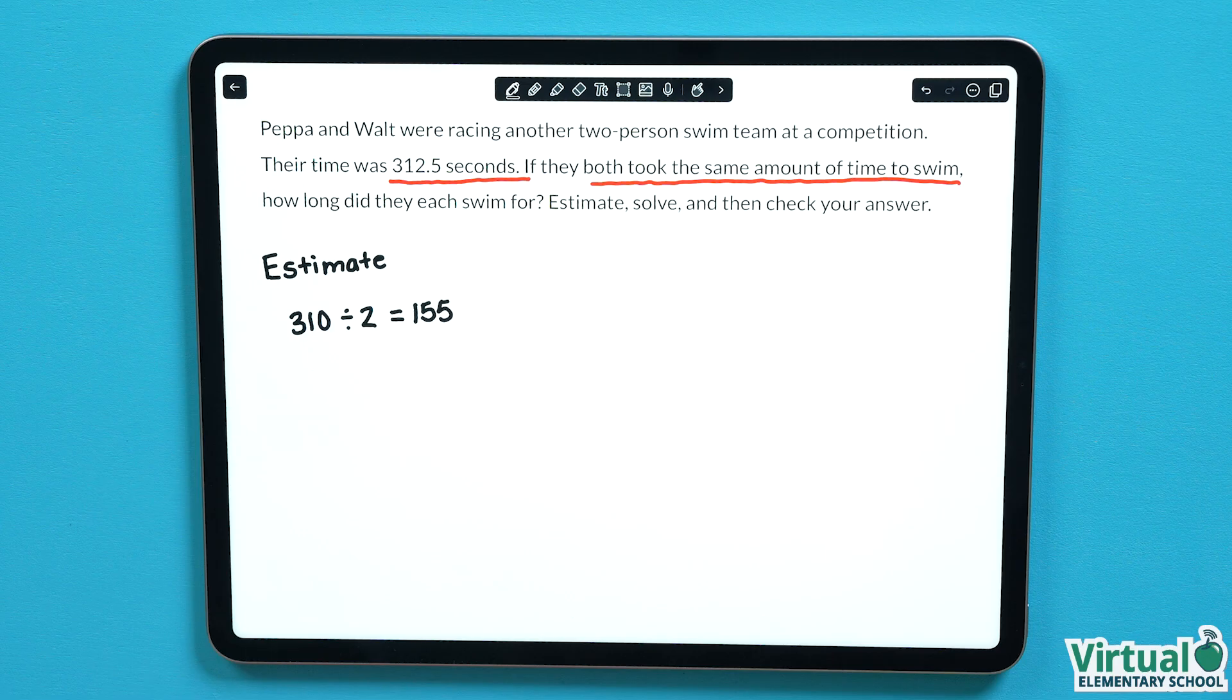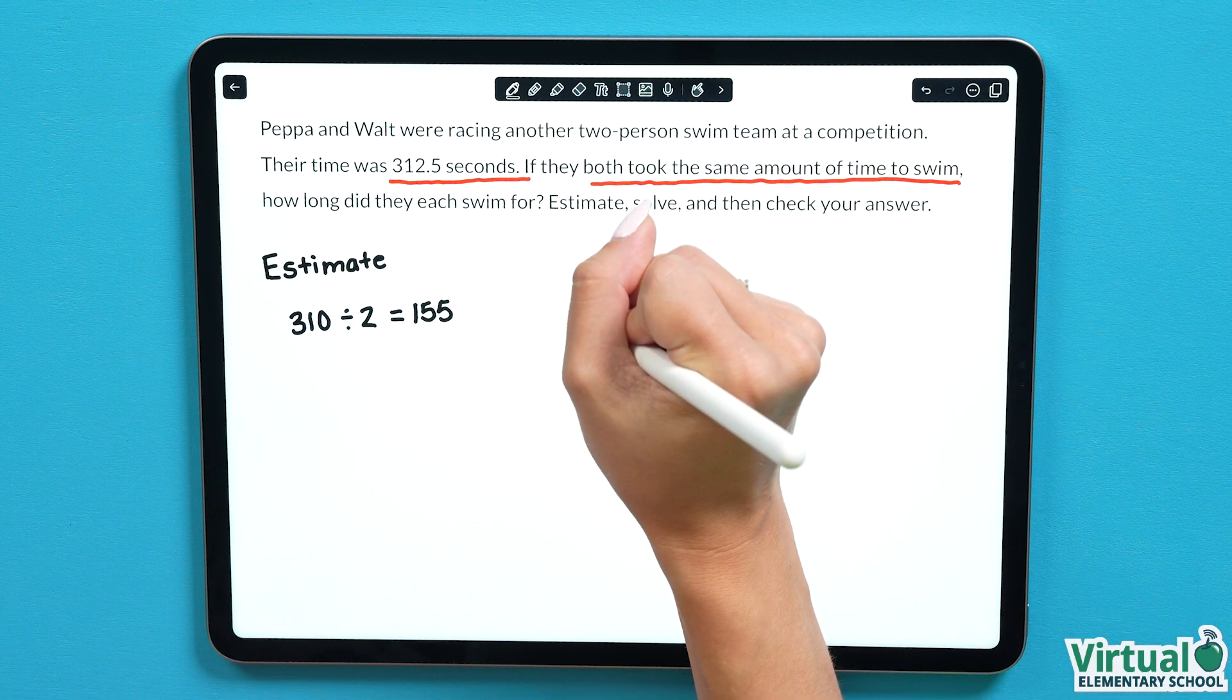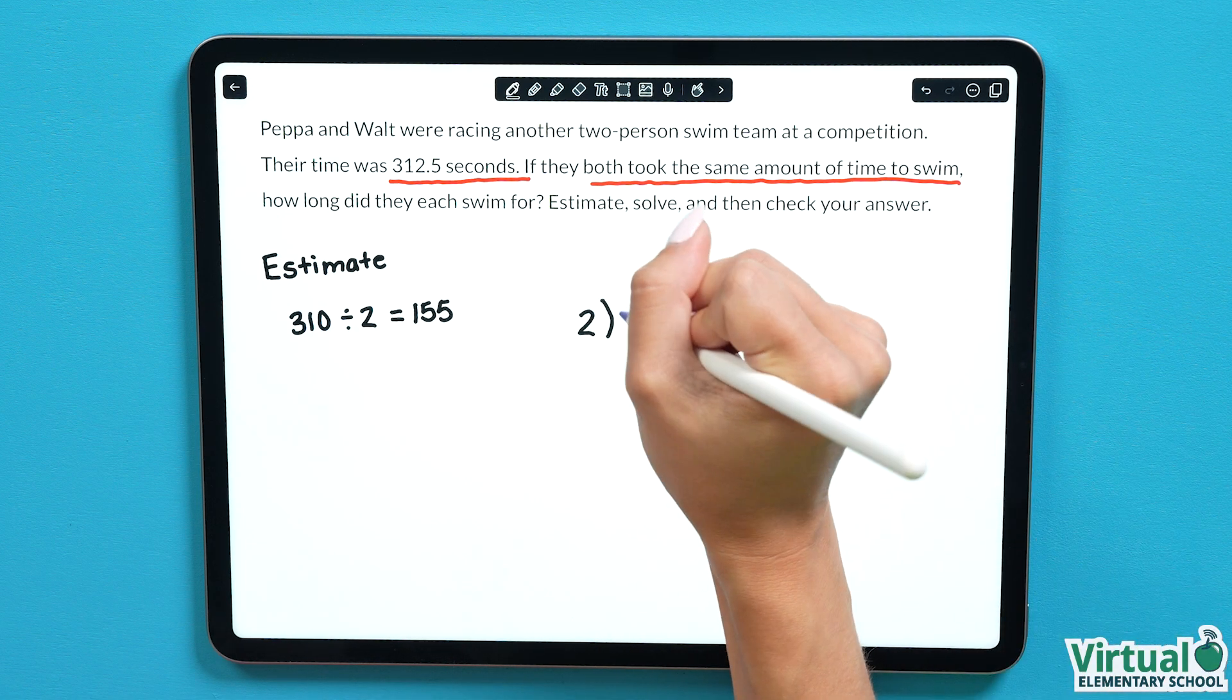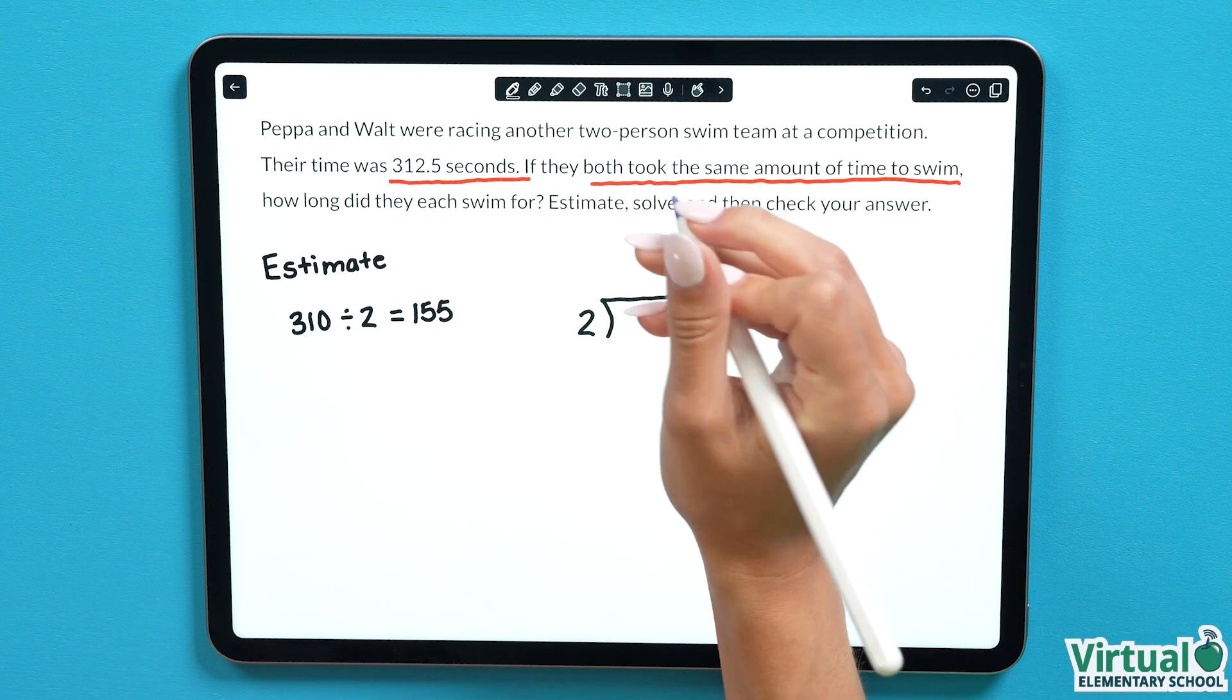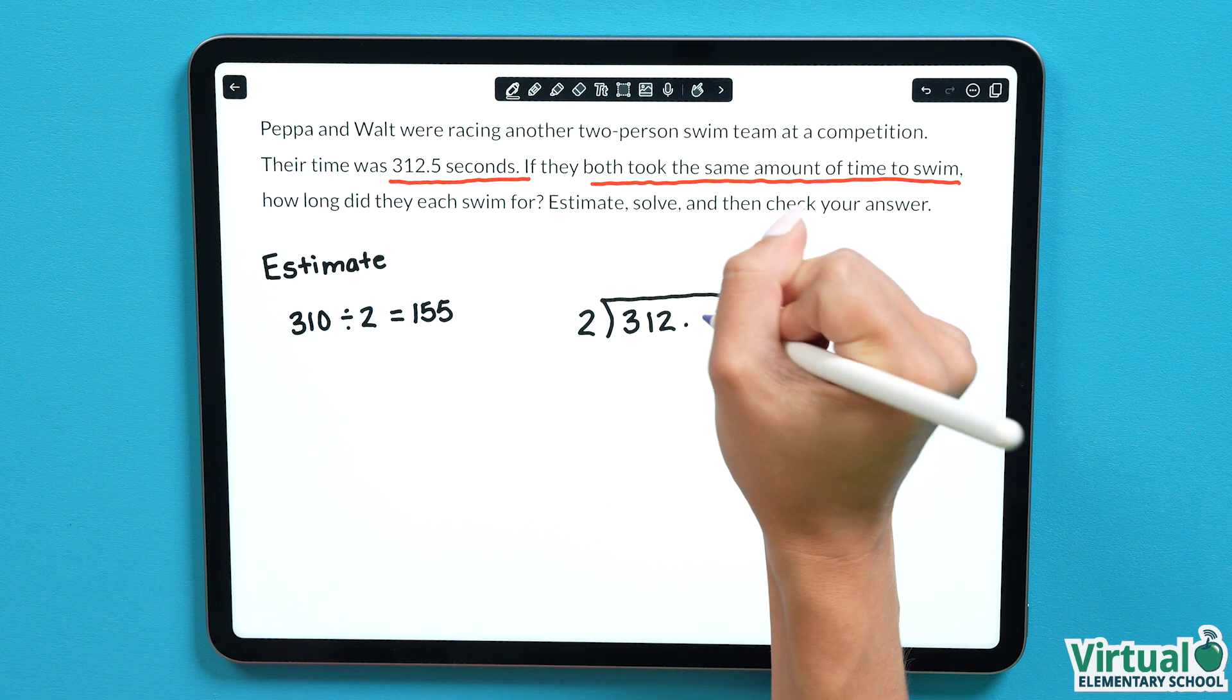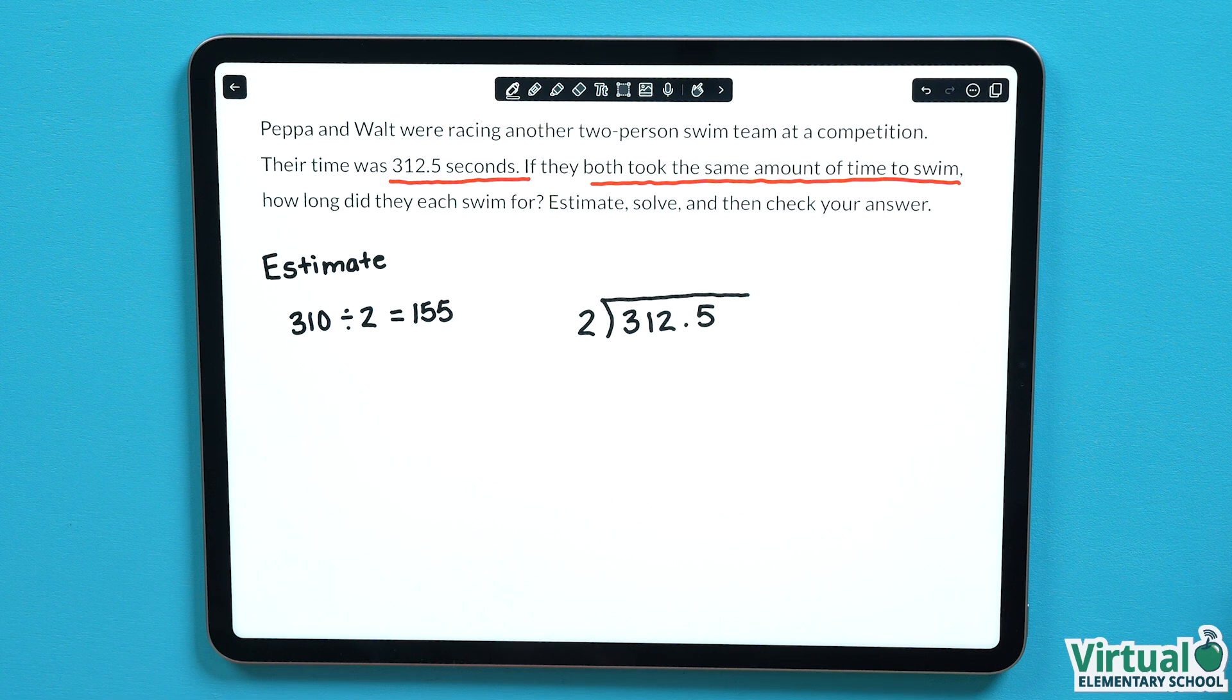Now it's time to solve. We can start by setting up our long division formula first, then we will go through the steps. We know that we have a 2 here, and under our long division symbol, we will put 312.5, since that was the total amount of time it took Peppa and Walt to swim.